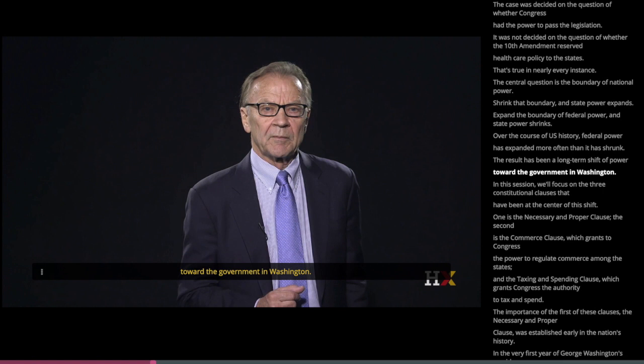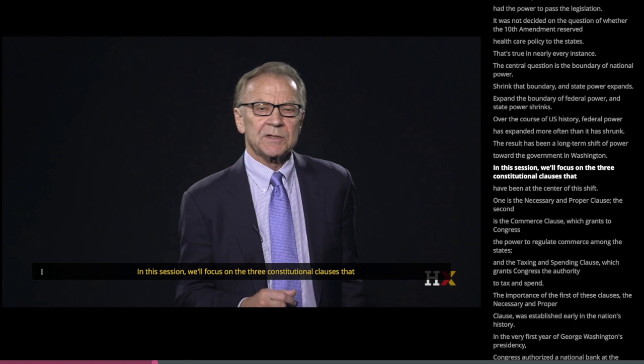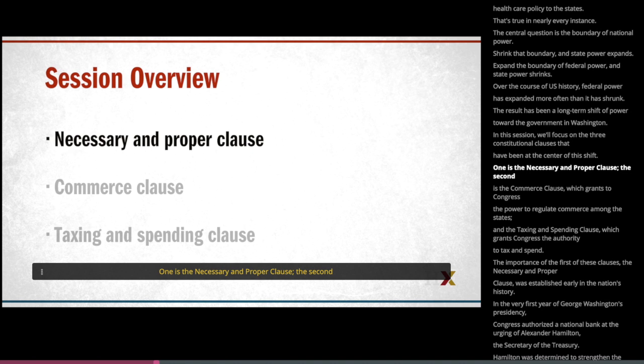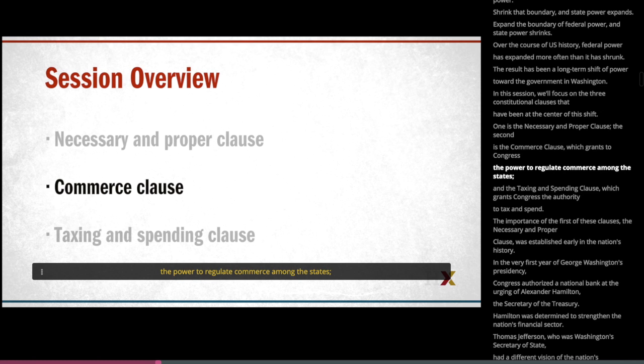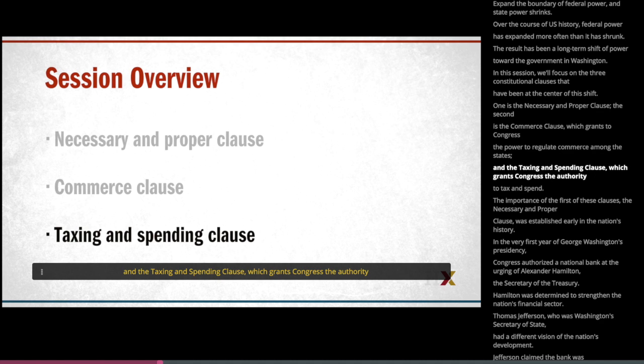In this session, we'll focus on the three constitutional clauses that have been at the center of this shift. One is the Necessary and Proper Clause. The second is the Commerce Clause, which grants Congress the power to regulate commerce among the states. And the third is the Taxing and Spending Clause, which grants Congress the authority to tax and spend.